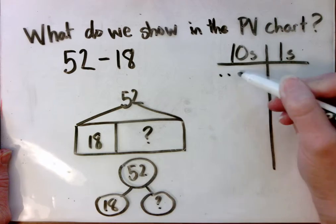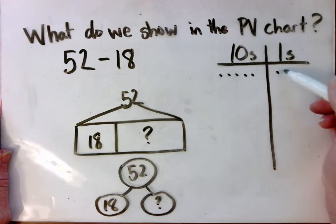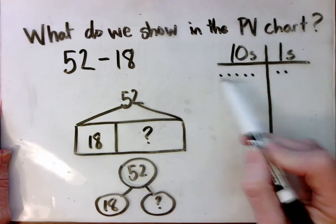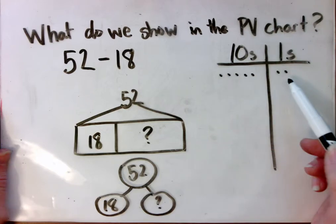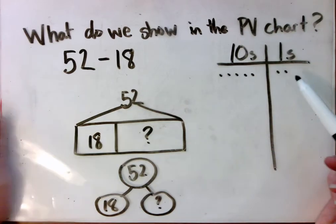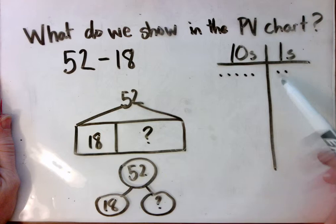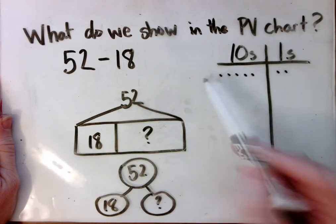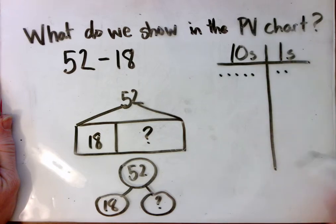So we have 52 shown on our chart, 5 tens, 2 ones. And then we don't show 18 in our chart by making another part. We already have the whole. We have to take away that part.